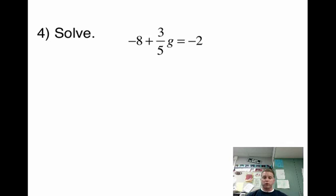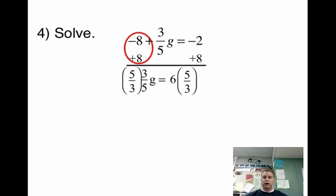Would you try number 4? Go ahead and pause the video. So now, hopefully you've tried it. You would add 8 to both sides. Those zero out. And leave us 3/5g. A negative 2 plus a positive 8 is 6. They're multiplying by 3/5. So we're going to divide by 3/5. So we do the reciprocal. And we multiply both sides by 5/3. Those cancel out. Give us our big fat 1. And we're left with g is equal to 30 over 3. Well, 30 over 3 is simplified to 10.